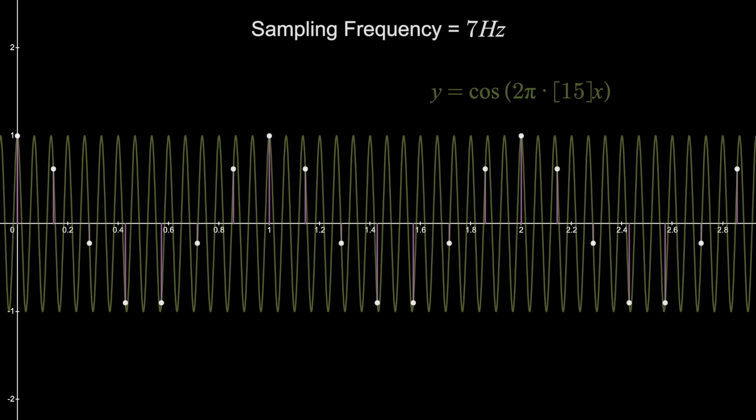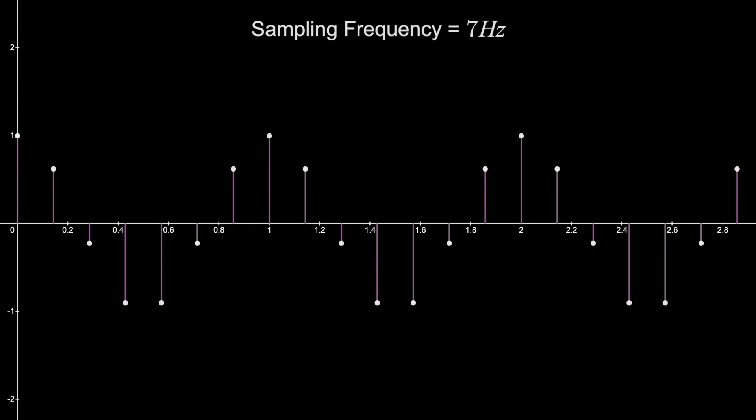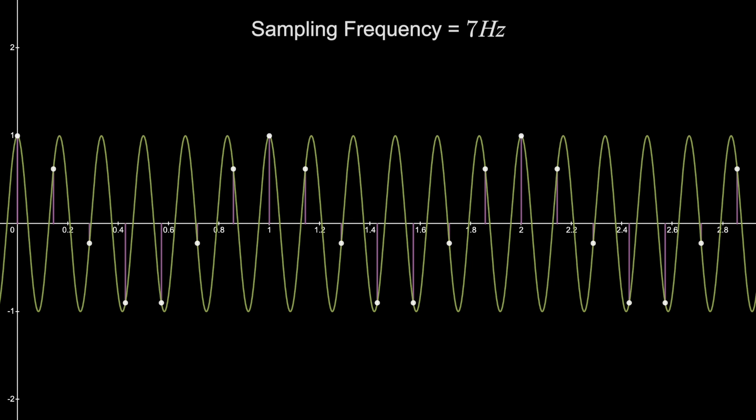So you could not tell me the original function if I gave you these samples. Because all the other information is lost and you'd have no idea whether the original was this, or this, or something else. It could technically be anything that goes through all of these sampled points, but if we stick to just sinusoids, then you still have unlimited choices.